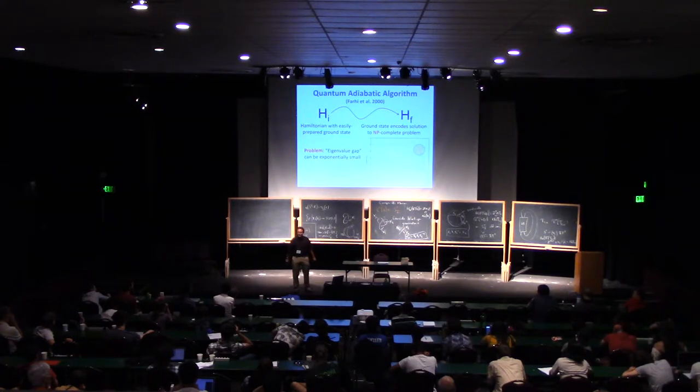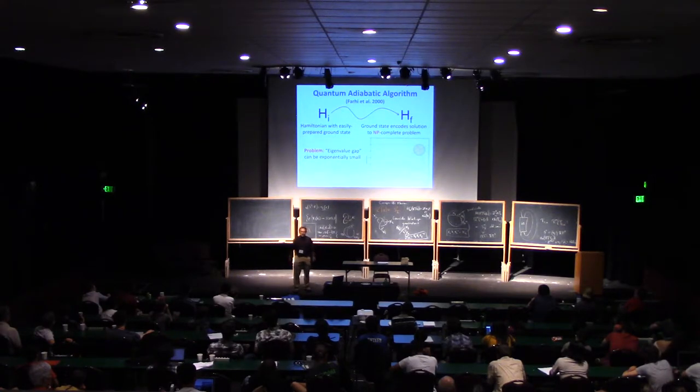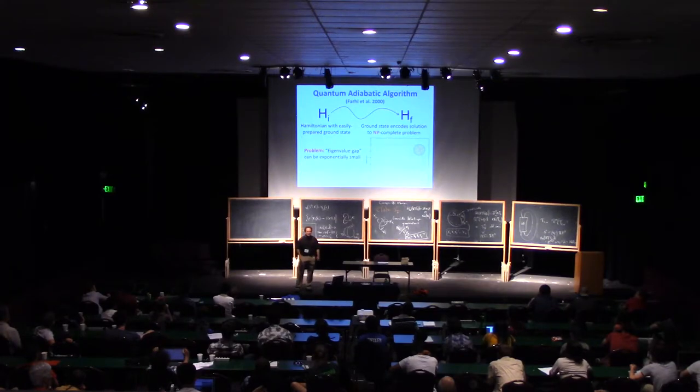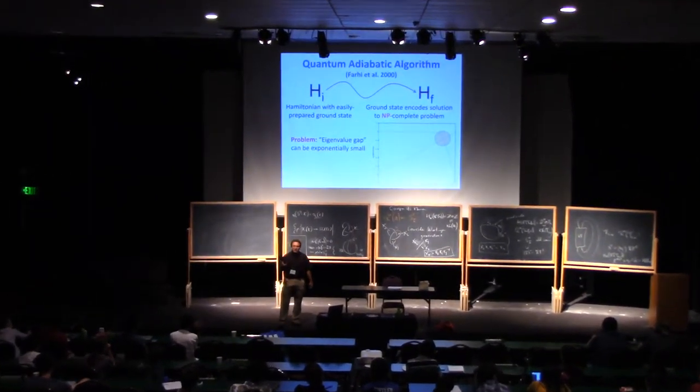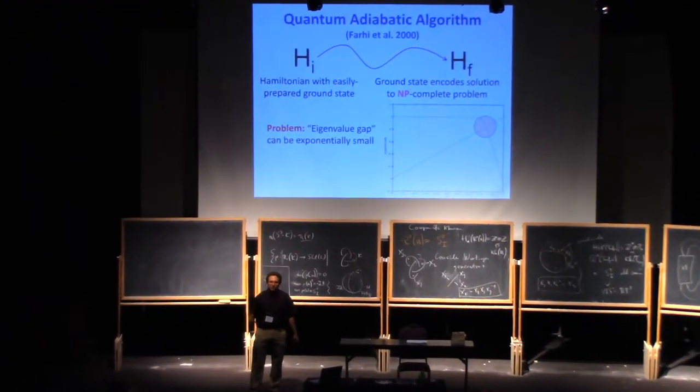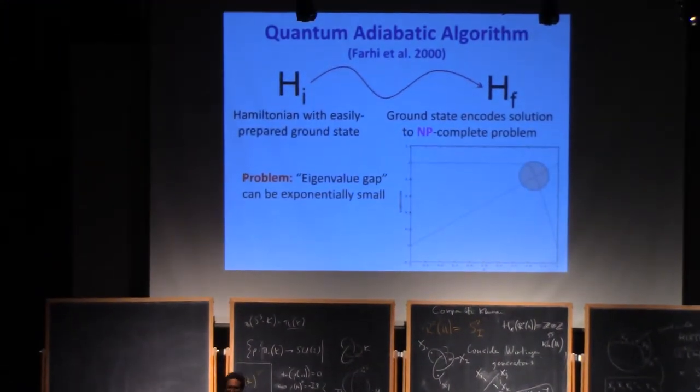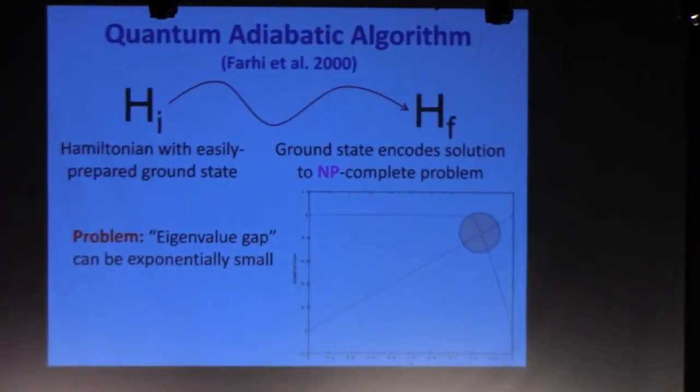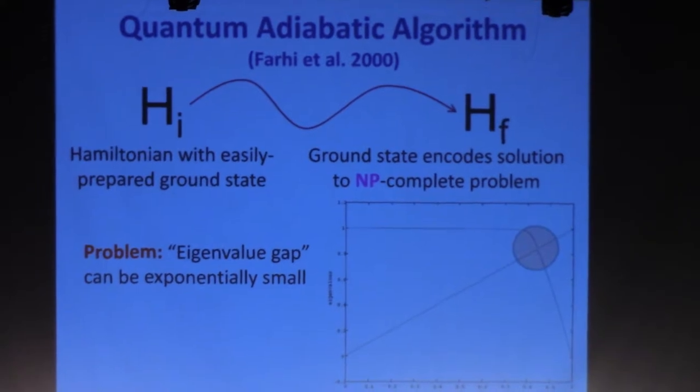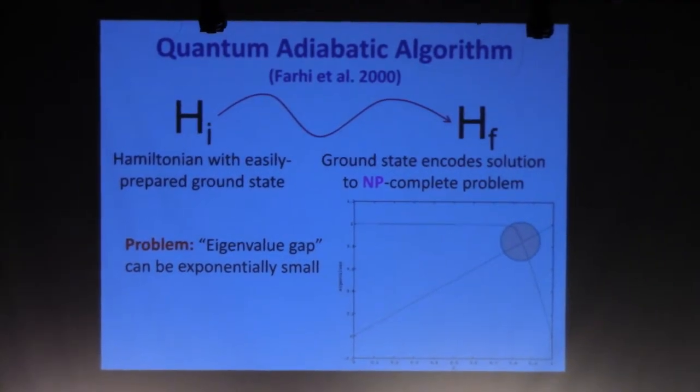Farhi told me the wonderful story that he went once to an expert in condensed matter physics because they have generations of experience calculating spectral gaps, and he said, based on your experience with similar physical systems, do you think that this spectral gap will decrease polynomially or exponentially as a function of the number of particles in the system? And the guy thought about it, and he said, I think it will decrease exponentially. That was not the answer that Farhi wanted to hear. That means that it takes exponential time. So he said, why? What's the physical reason for it? And the guy thought about it some more, and he said, well, it's because otherwise your algorithm would work.